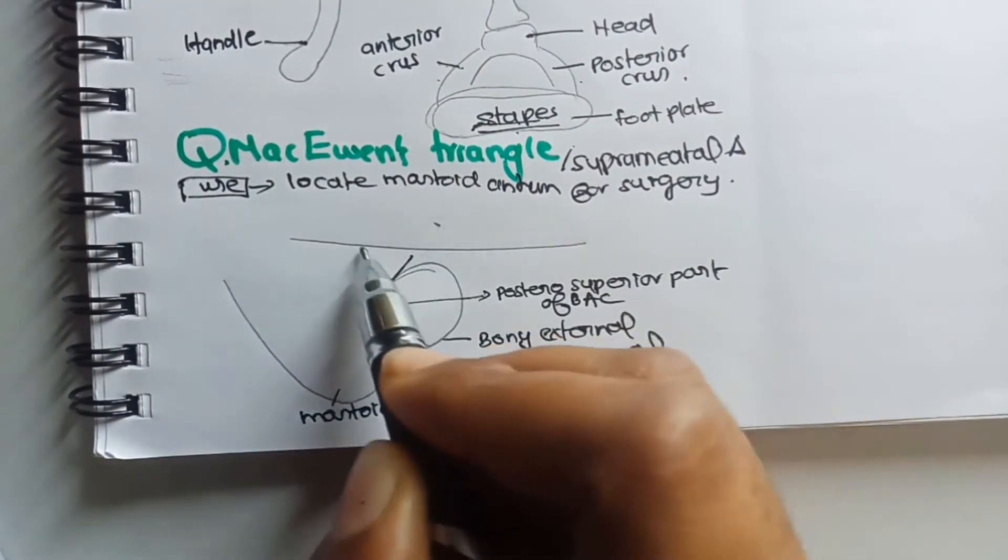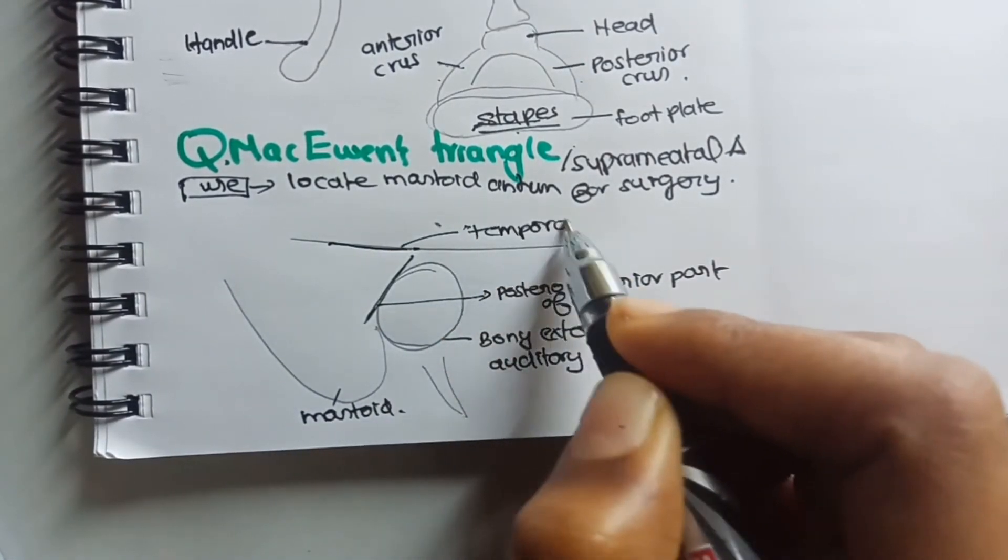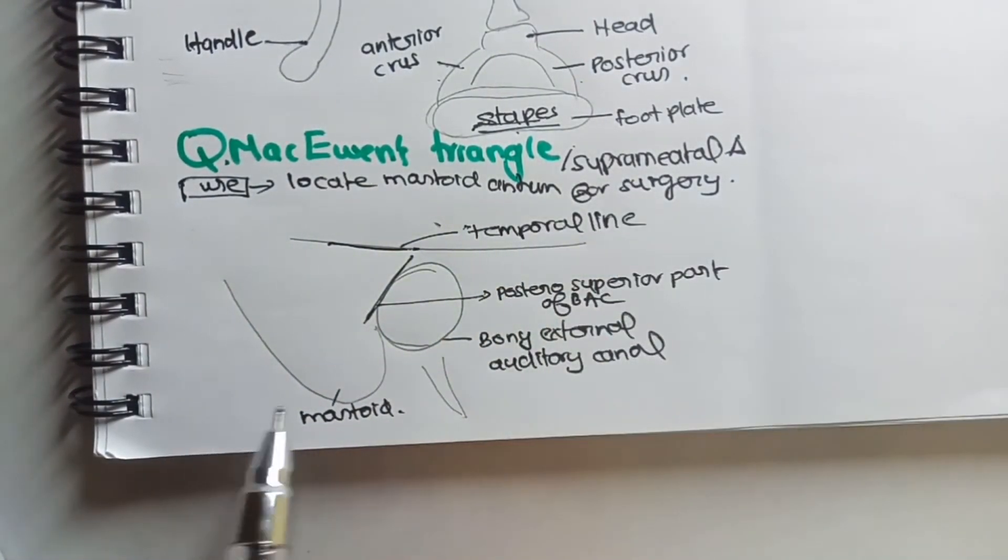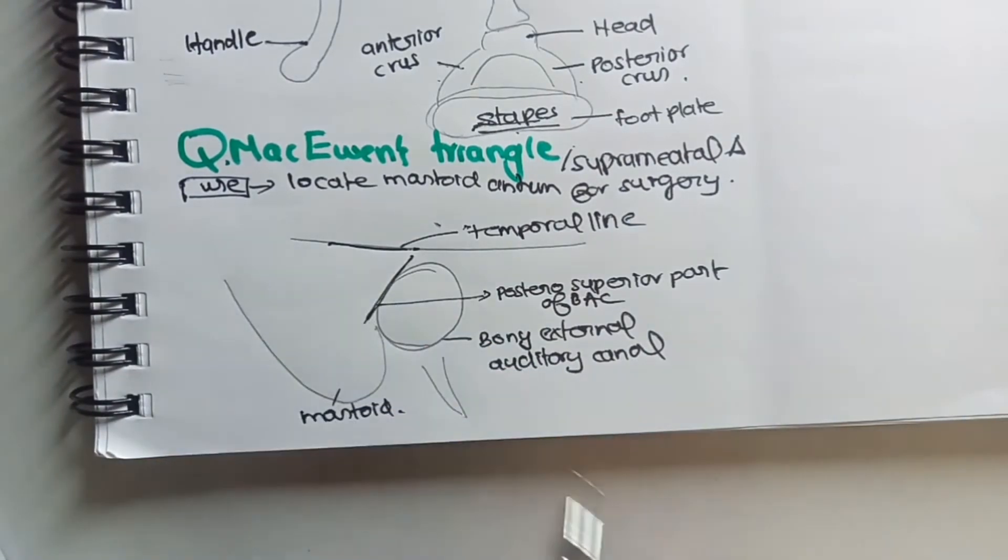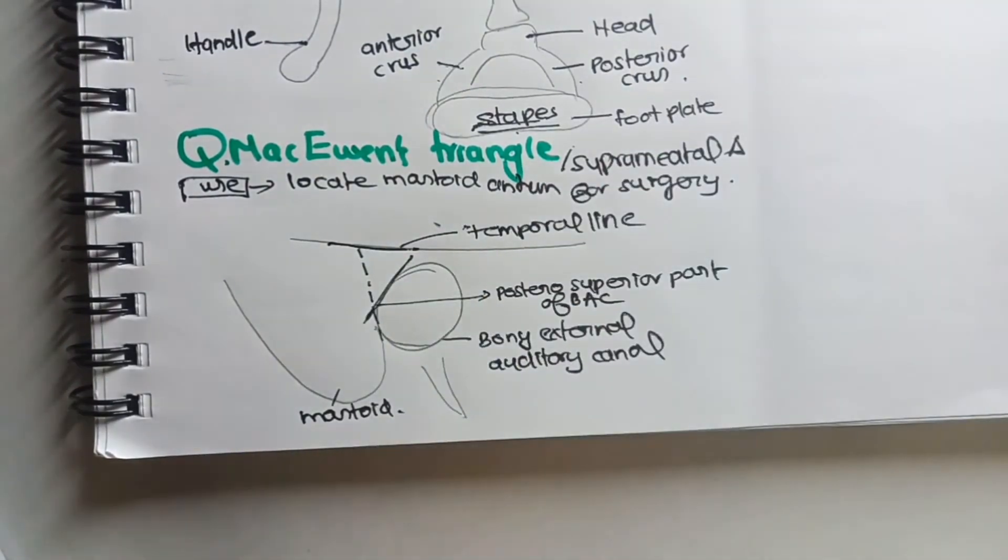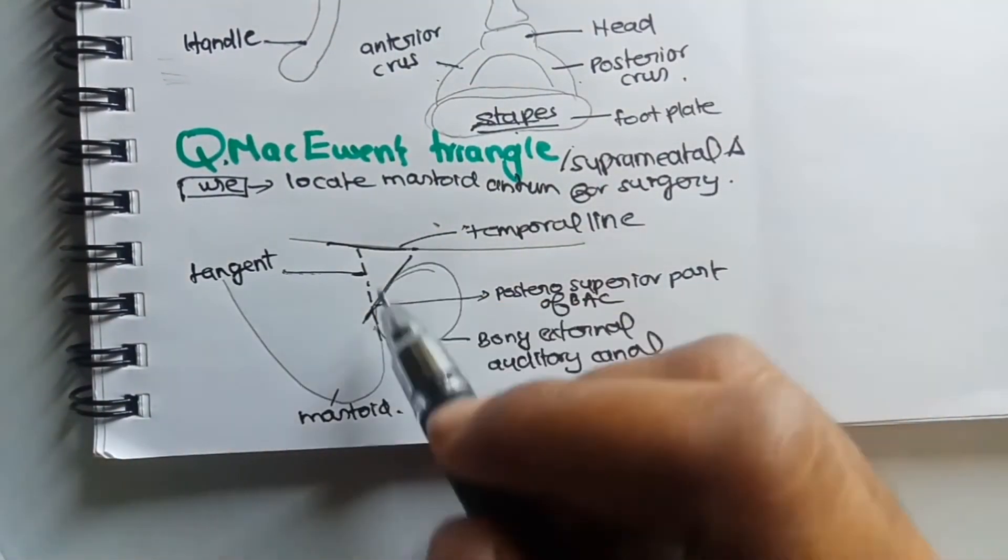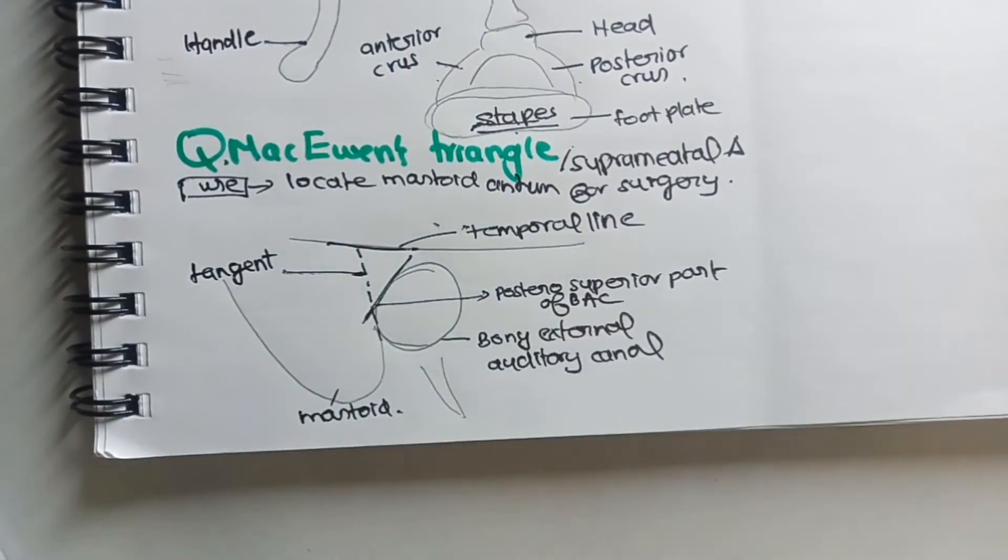Now about the superior border, it is formed by the temporal line. This is a line that is continued along with the zygomatic arch backward. Now posteriorly we are actually drawing a tangent from the temporal line to the bony external auditory canal. So this tangent forms the posterior boundary.